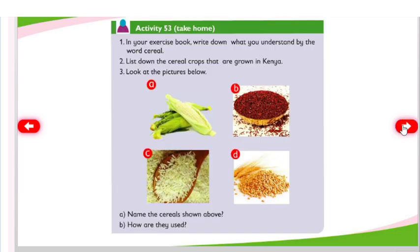Activity 53 — Take home: In your exercise book, write down what you understand by the word cereal. List down the cereal crops that are grown in Kenya. Look at the pictures below. Name the cereals shown above. How are they used?